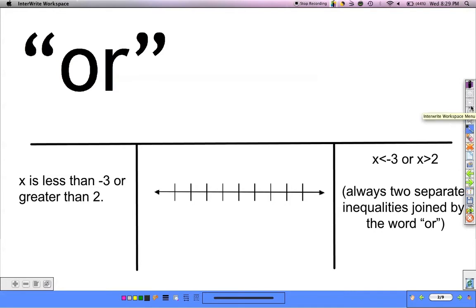All right, so we'll talk about the case 'or'. What does it mean? Well in words, if I say x is less than negative 3 or x is greater than 2, that just gives me some options.